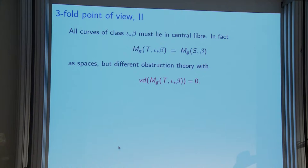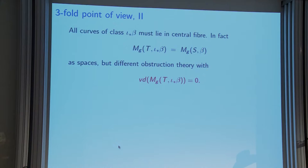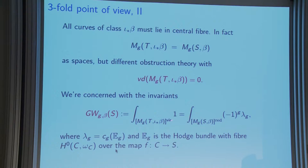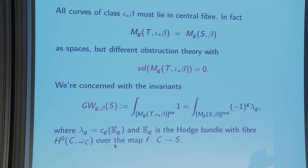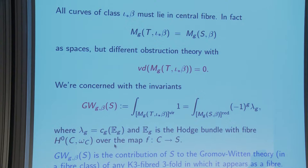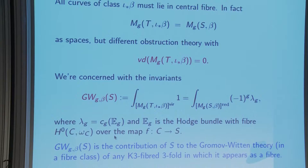All curves in the fiber class actually lie in the central fiber, but you get a different obstruction theory. The virtual dimension is now zero because you're in Calabi-Yau land. The invariants this talk is concerned with: you integrate one over that moduli space with virtual cycle of virtual dimension zero. You can express this in terms of S itself by taking the reduced class and integrating a certain lambda class — the top Chern class of the Hodge bundle — over it.